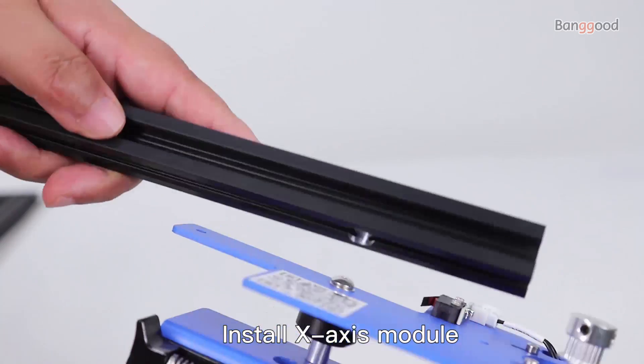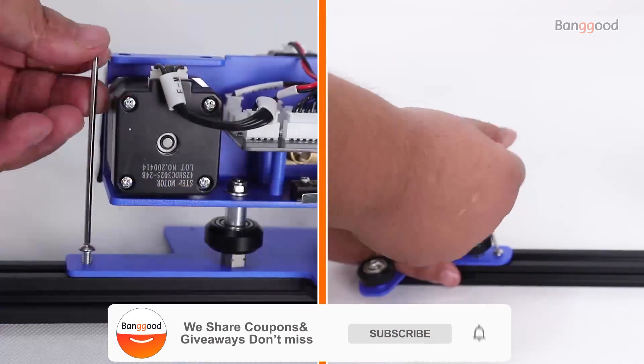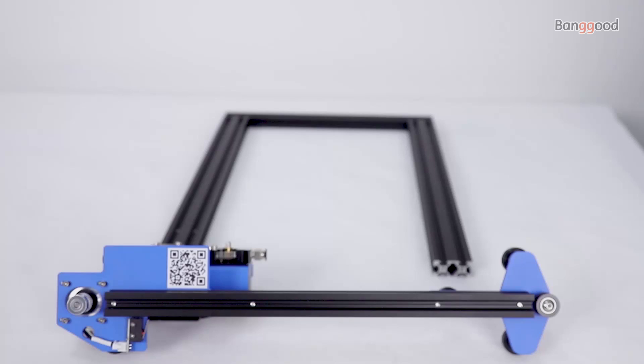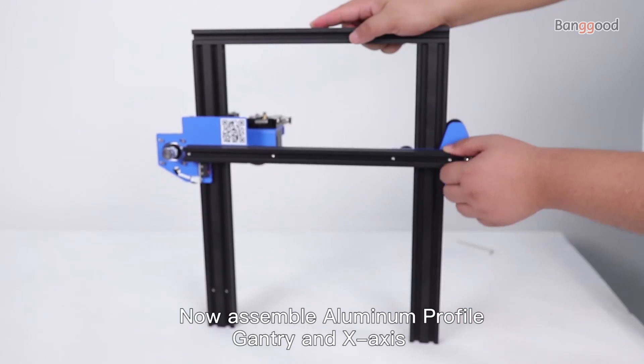Install the X-axis module and tighten with M416 screws. Now assemble the aluminum profile, gantry, and X-axis.